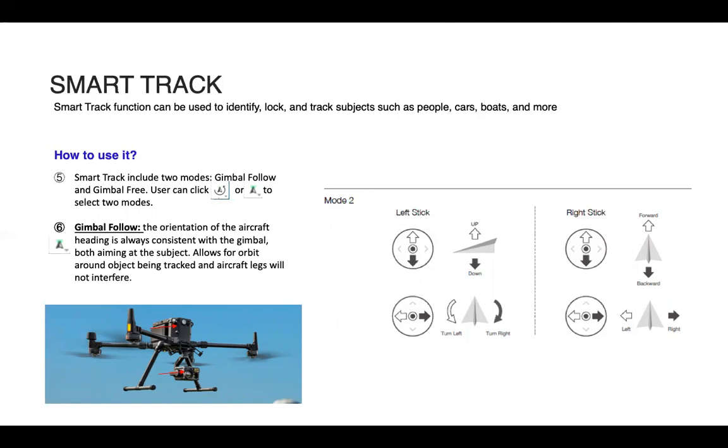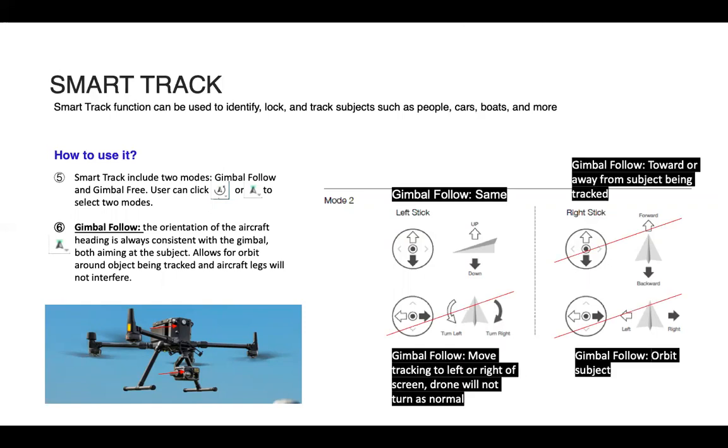So looking at this graphic on the right, this would be your typical Mode 2 controls. On the left side, we have the left stick; right side, right stick. We go left stick up and down for the drone. When we are using gimbal follow and SmartTracking, some of these rules change. Our right stick, instead of being forward and backwards, is going to be towards and away from the subject because when we go left and right, we are orbiting the subject instead of going left and right directly from the drone. And then with our left stick going left and right, that's going to move what we're tracking to the left or right of the screen. The drone is not going to turn as normal. So if you're in this situation and you want to go back to Mode 2 controls, that's when we'd want to pause the SmartTracking or just turn SmartTracking off.